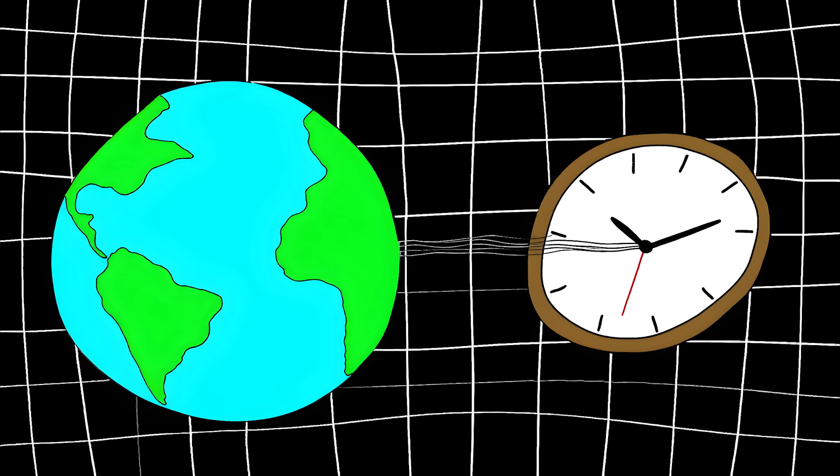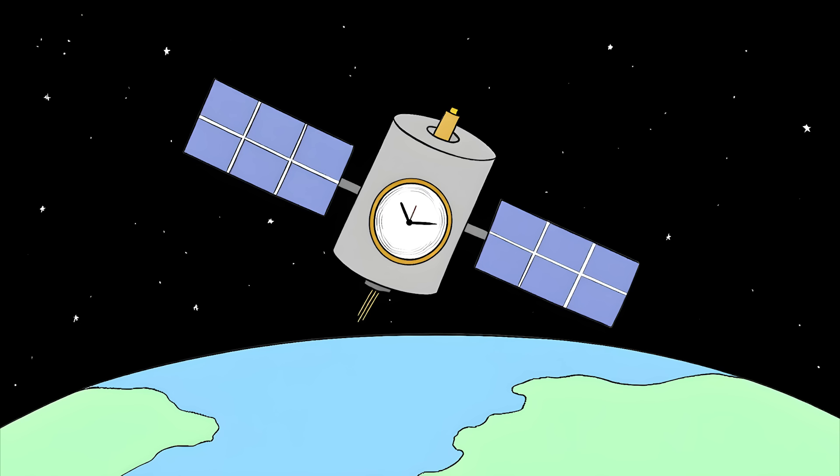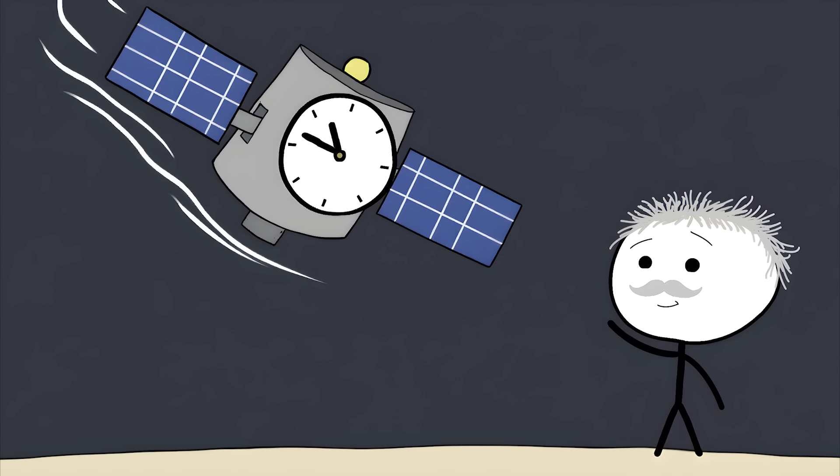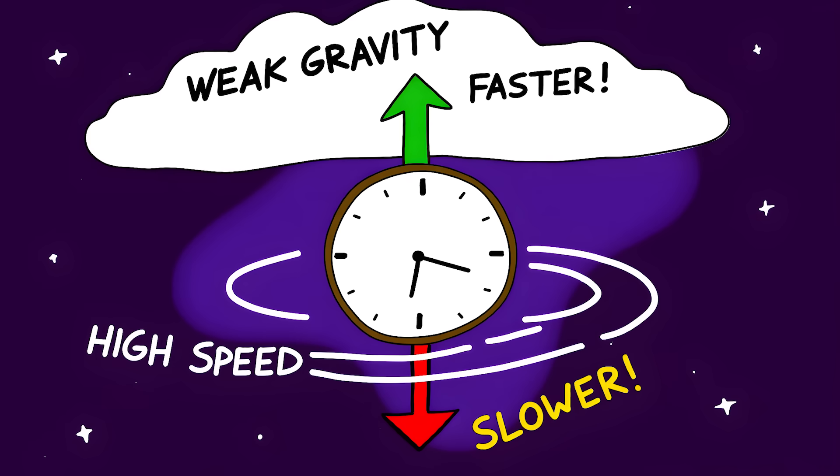Gravity doesn't just pull on objects, it actually pulls on time itself. The stronger the gravity, the slower time moves. Since Earth's gravity is weaker where the satellites are, time moves faster for them. The satellites are also moving really fast, about 8,700 miles per hour. According to Einstein, the faster something moves, the slower time moves for it. So we have two effects fighting each other: weaker gravity speeding time up and high speed slowing it down.